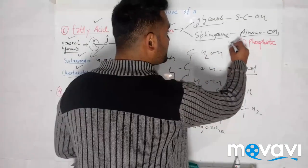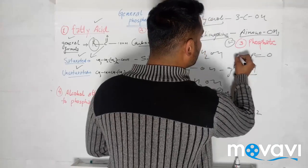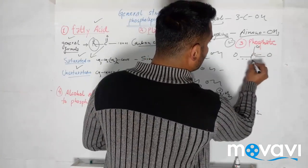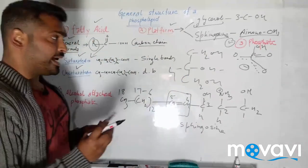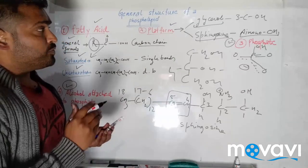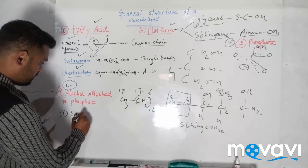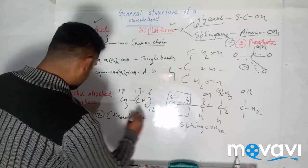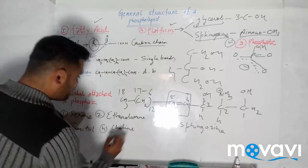The third component is the phosphate group — simply the phosphate bearing a negative charge and a hydroxyl group. To this phosphate we attach the fourth part, which are alcohols. The important alcohols are: first, serine; second, ethanolamine; third, inositol; and fourth, choline. There are many more, but we need to focus on these important ones. So we now know all 4 components that make a phospholipid.